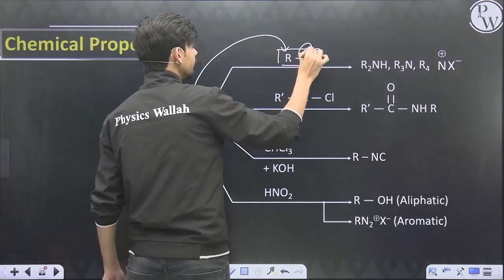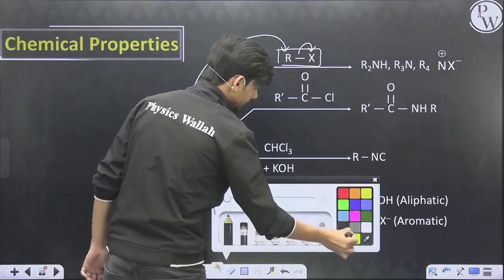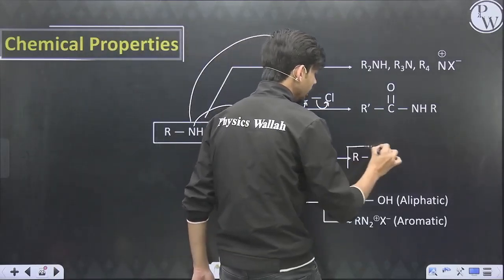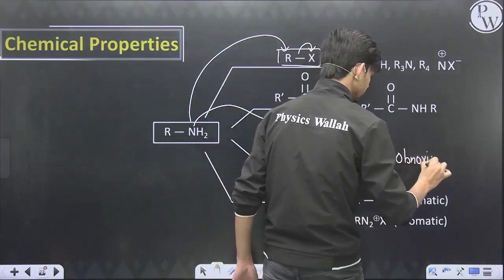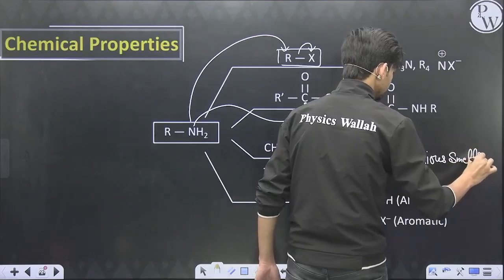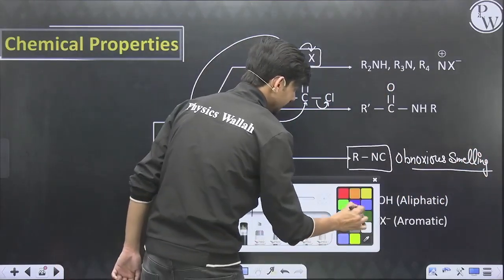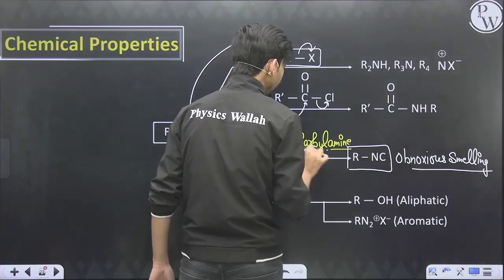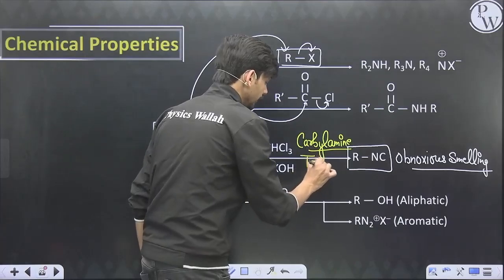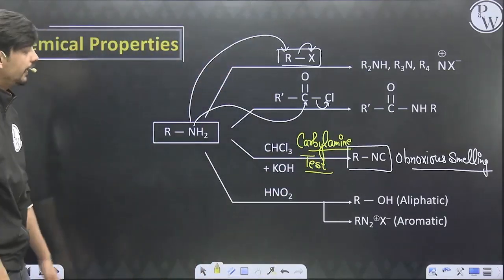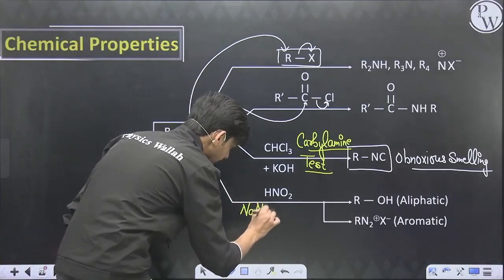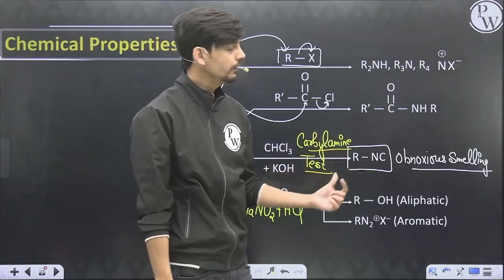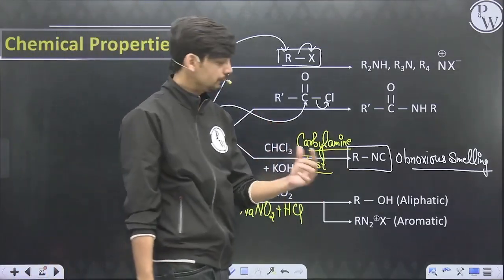The chemical properties of amines: on reaction with RX, amines give nucleophilic substitution because nitrogen is a very powerful nucleophile. On reaction with acid derivatives, acylation occurs. With chloroform and KOH, a primary amine gives an obnoxious-smelling compound, alkyl isocyanide. This is known as the carbylamine test for primary amines — only primary amines give this test with chloroform and a base.